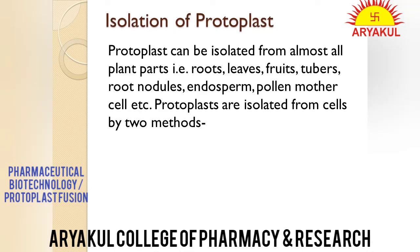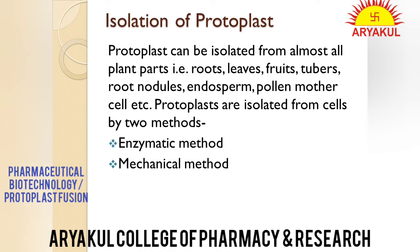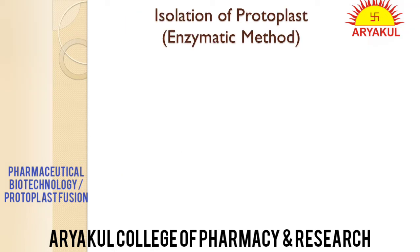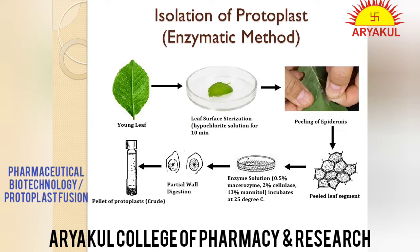Ab hum baat karenge isolation of protoplast ki — protoplast ko kaise isolate kiya jata hai. Ham roots se kar sakte hain, leaves se, fruits, tubers, root nodules, endosperm etc. Generally isolate karne ke do methods hote hain: enzymatic method and mechanical method. Mechanical method ka zyada discussion nahi karenge because it is not very convenient — mechanically plasmolyzed cells ko cut karke protoplast nikalna padta hai, jo hectic hai and has limited industrial application. Hum emphasis denge enzymatic method pe.